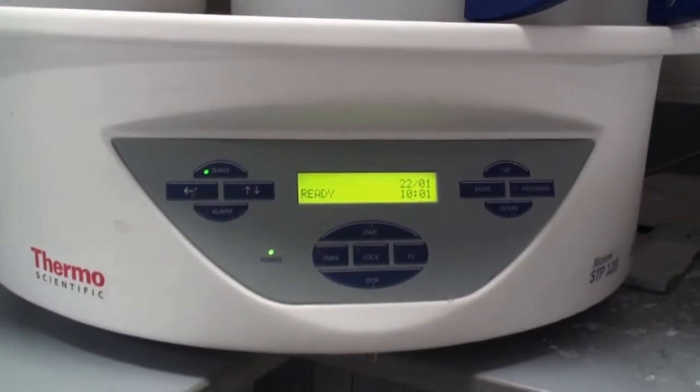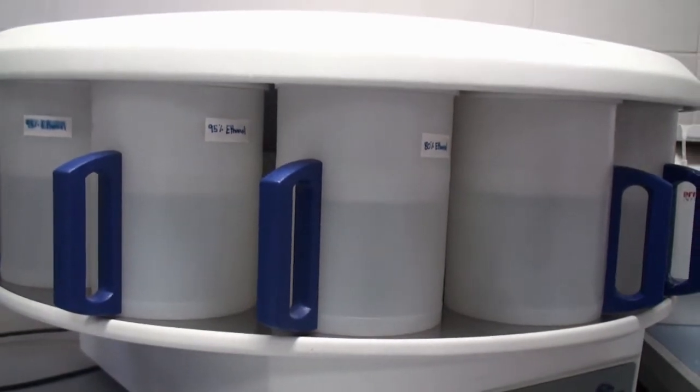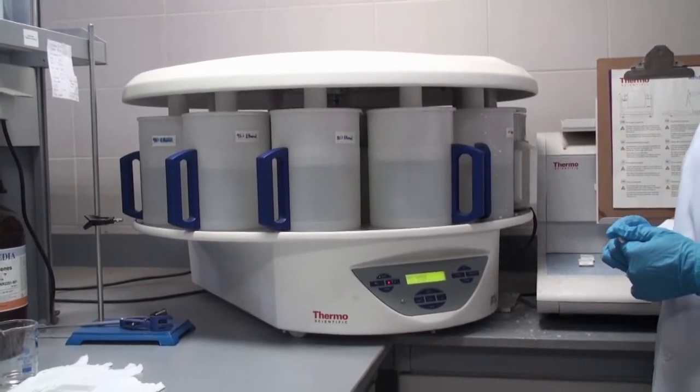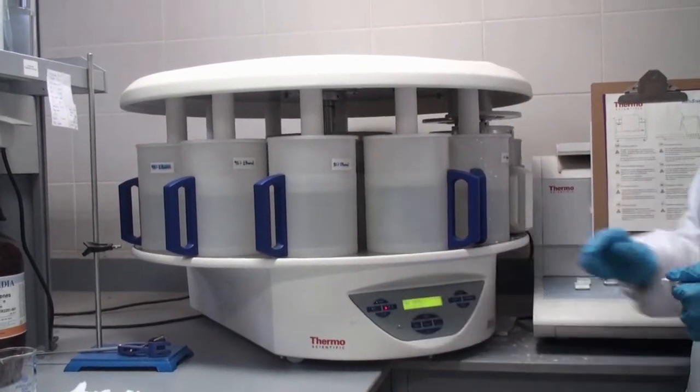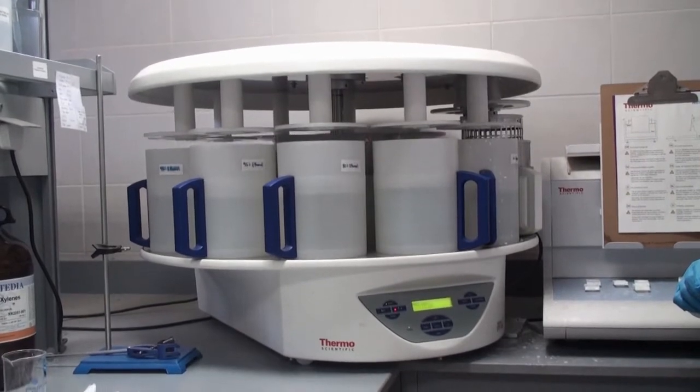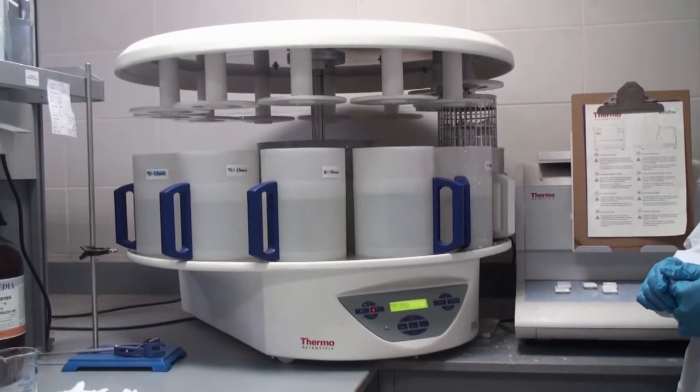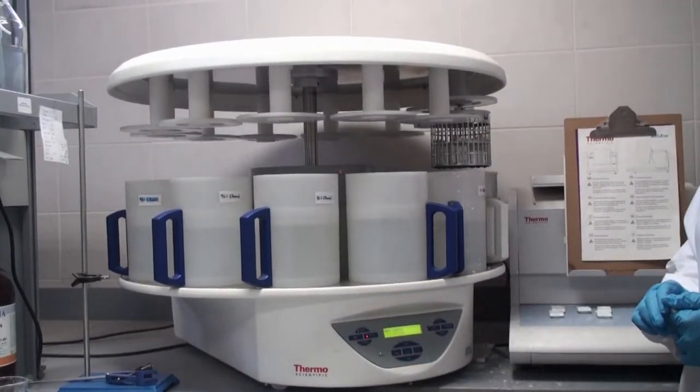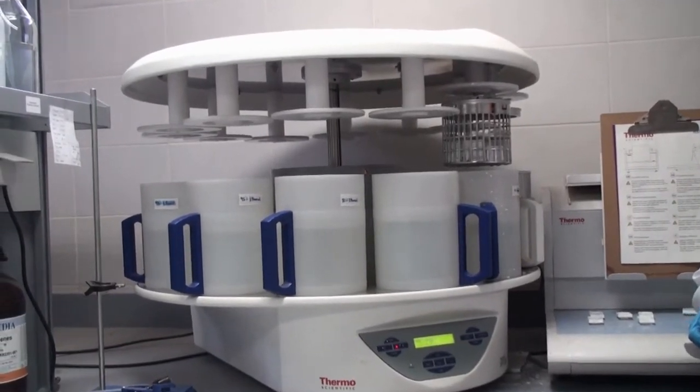This is the automated tissue processor. Now we will put the sample in the automated tissue processor and the automated tissue processor can be programmed to different programs depending on your sample and your needs. The most commonly used program is that we start with another step of fixation to make sure that your sample is completely fixed. The first two jars contain formalin as well, 10% paraformaldehyde. And after that we start the serial graded ethanol dehydration.